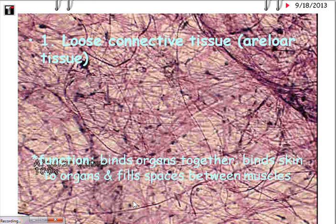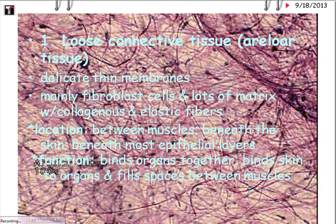This is loose connective tissue, also called areolar tissue. There is lots of ground matrix with empty spaces along with the different protein fibers. Its functions are to bind organs together — it binds skin to organs and fills spaces between muscles. It has very delicate, thin membranes, mainly fibroblast cells, and lots of matrix, with collagenous and elastic fibers. Its location is between muscles, beneath the skin, and beneath most epithelial cells.